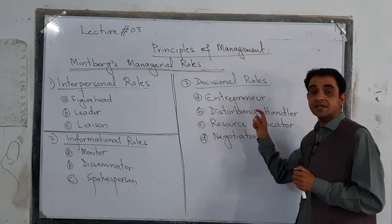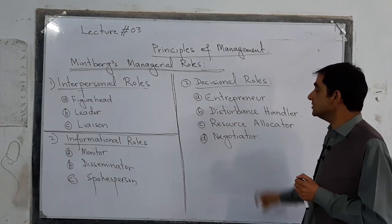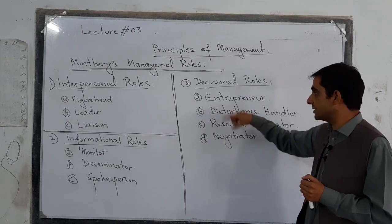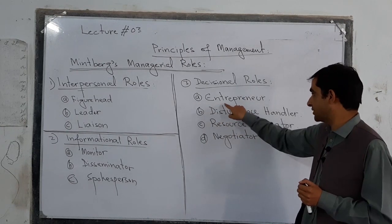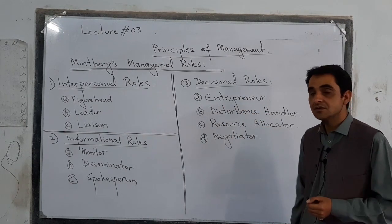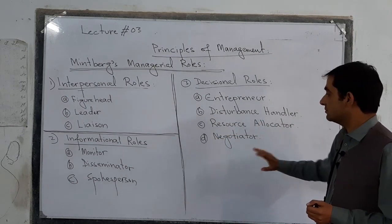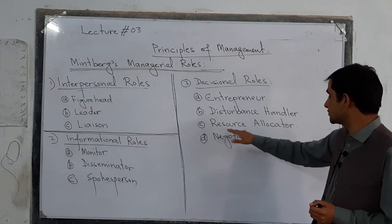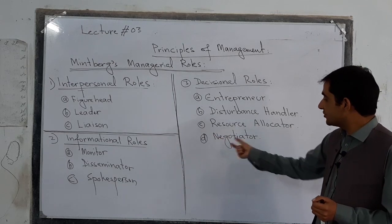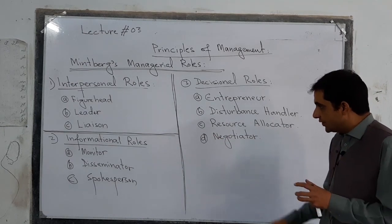Number three, the category of decisional roles. In decisional roles, sub-roles are: A, entrepreneur role; B, disturbance handler role; C, resource allocator role; D, negotiator role.